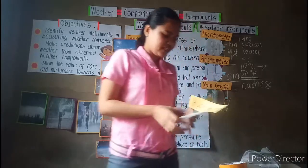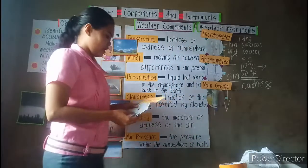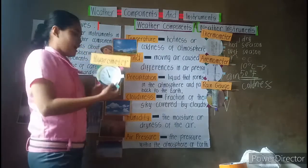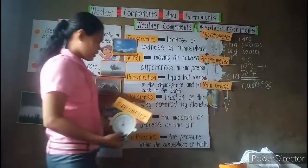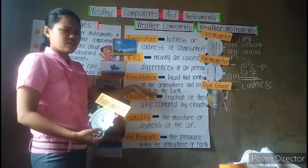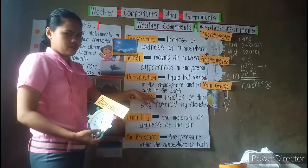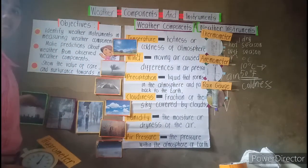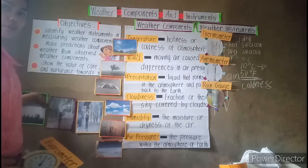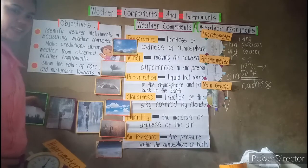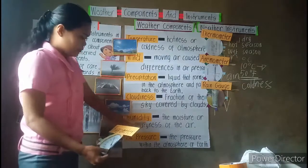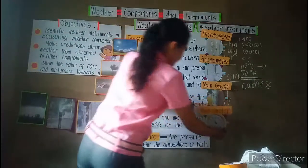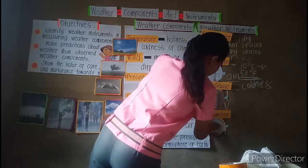Another instrument is the hygrometer. We don't have an instrument for cloudiness because it is really obvious already. Once the cloud is dark like this, there's a possibility that it will rain. So we will proceed to humidity — this one is for the humidity.